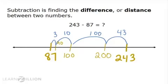Let's look at the total distance we traveled. 13 plus 100 plus 43. Now I have an easy addition problem that I can rewrite vertically or solve in my head.